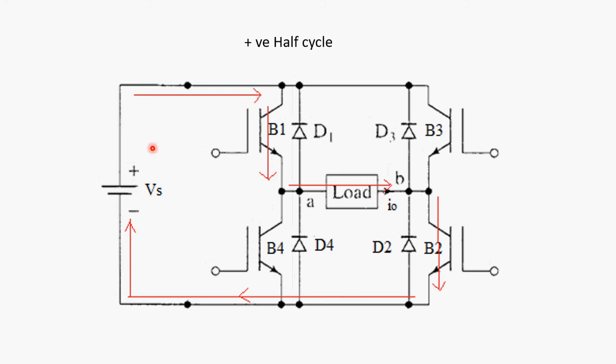To get a positive half cycle or to get point A positive, you have to turn on IGBT B1 and IGBT B2 simultaneously. When these devices turn on, they will work as a short circuit. Current flows from the positive terminal of the battery through B1 at point A and from point A through load to point B through B2 and back to negative plane.